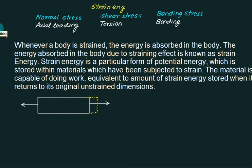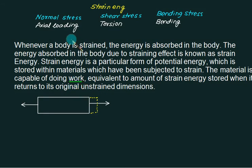The material is capable of doing work. We will first develop the expression for work, and the equivalent amount of strain energy is stored as the body returns to its original shape. So basically it is based on the law of conservation of energy — whatever delta U there is, the amount of energy stored is the same as the work done.